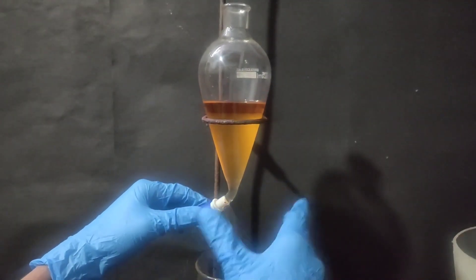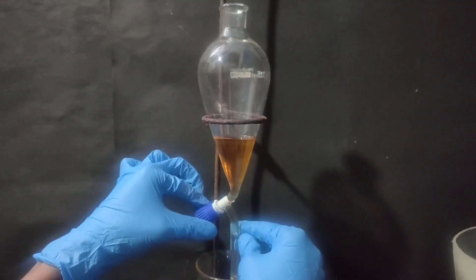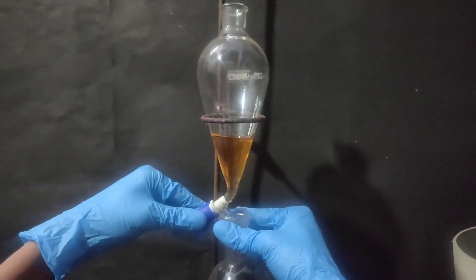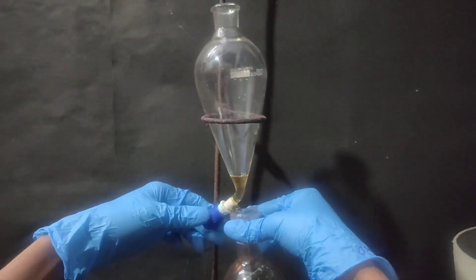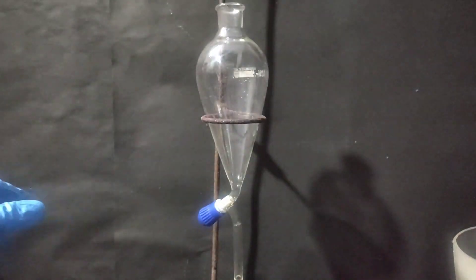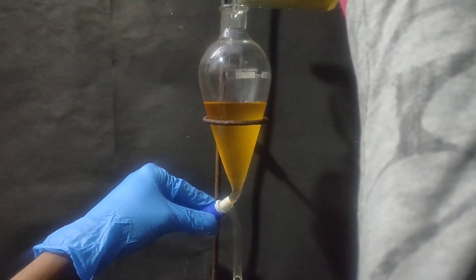The lower aqueous layer was drained. Then the upper ethereal layer was drained into a flask. Then the aqueous layer was again poured back into the separatory funnel for further extraction.